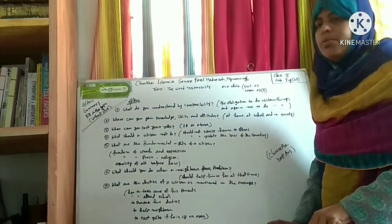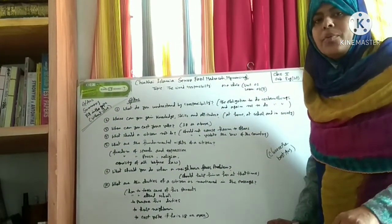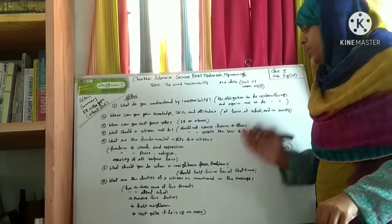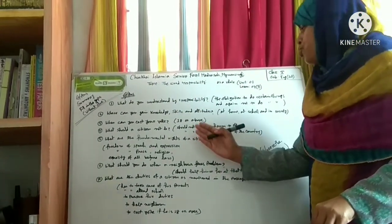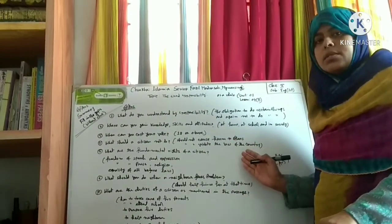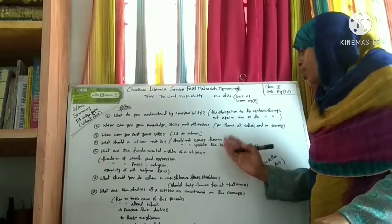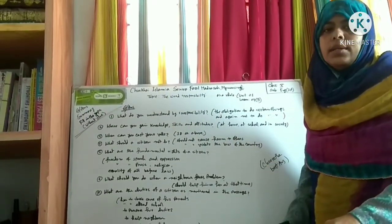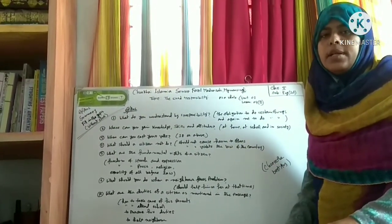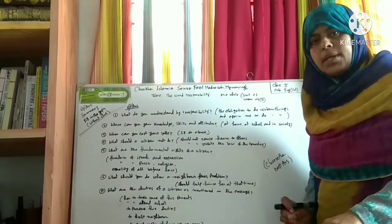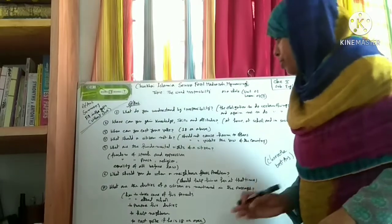Question 3: What should the citizen not do? A citizen should not do harm to others and not violate the law of the country. Next question is 5.